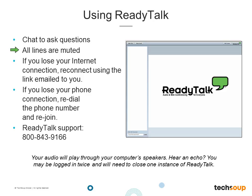We will keep all lines muted so you get a clear recording to refer to later and share with your friends and colleagues. Most of you are hearing audio through your computer speakers, so if you are hearing an echo you may be logged in more than once and will need to close additional instances of ReadyTalk. If the audio stream doesn't work, dial in using the alternate toll-free number Susan chatted out. If you lose your Internet connection, reconnect using the green Join Meeting button from your confirmation email. You can reach ReadyTalk support directly at 800-843-9166.